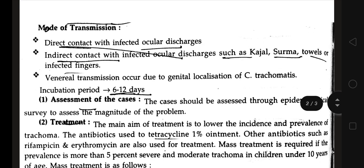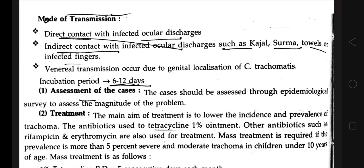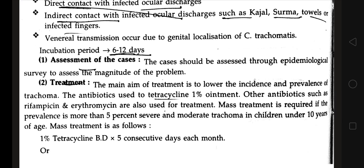The mode of transmission includes direct contact with infected ocular discharges, which transfers infection from an infected person to a healthy person. Indirect contact through infected ocular discharges via kajal, surma, towels, or infected fingers may also spread infection. Transmission can also occur due to genital localization of C. trachomatis, where the organism in the genital area may spread trachoma infection.